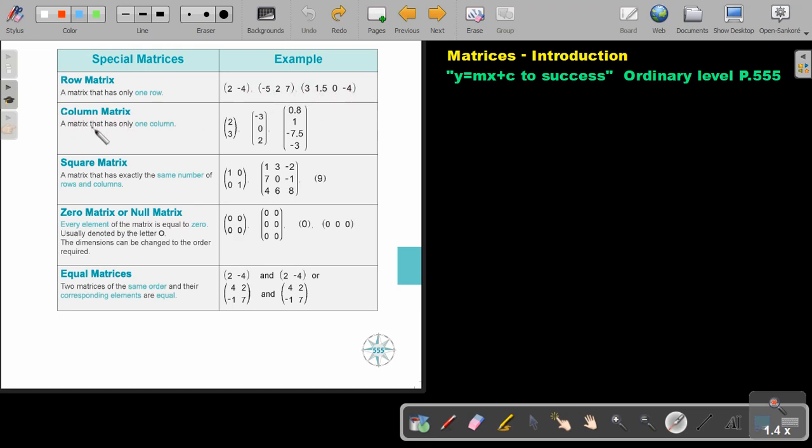What is a column matrix? A matrix that has only one column. So, one, one, one. But look at the rows. Two, three, and four.